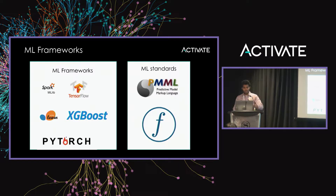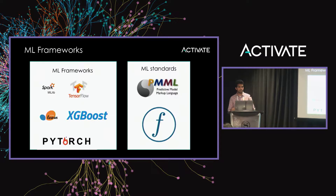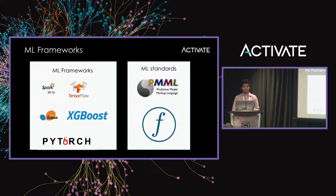There are a lot of ML frameworks out there. It baffles me that we're talking about AI and everything, but there seems to be no good inter-exchangeable format right now between different libraries. For example, let's say you train a model — your data scientists train it in scikit-learn. How would you use it in production?